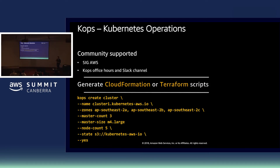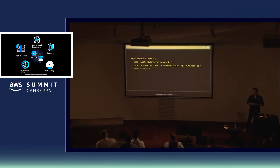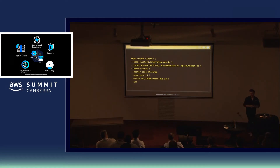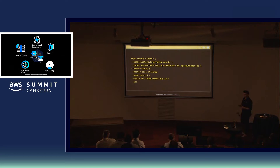How easy is it to deploy a Kubernetes cluster using KOPS? Basically, it's a command line tool and you specify a few parameters — you give it a name, specify some availability zones, choose some masters. The masters are the parts of your Kubernetes cluster that really govern and control how your cluster and applications behave. You specify a configuration store and then hit enter. Within probably seven to ten minutes, you'll have a fully operational Kubernetes cluster.